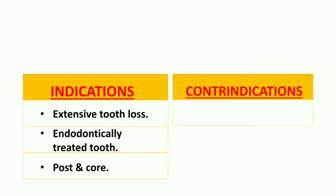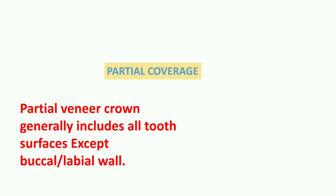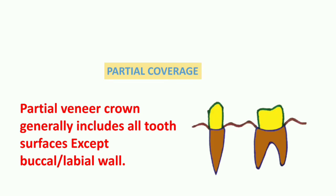We give a stronger retainer — that is, a full coverage or complete coverage retainer — in those cases. The contraindication of full coverage retainer is when tooth conservation is a priority, meaning we need to do minimum crown preparation. In such cases, full coverage retainers are not indicated.